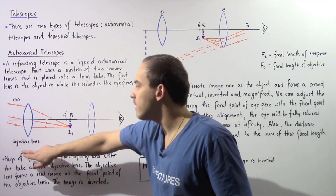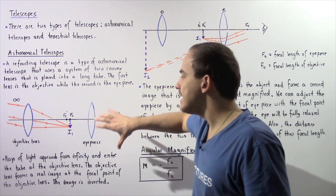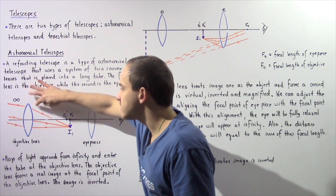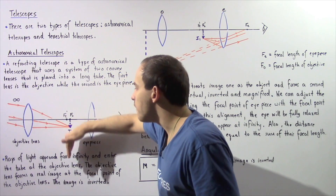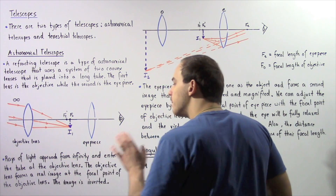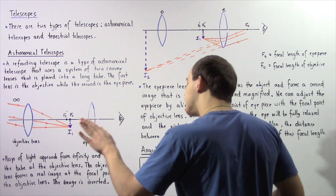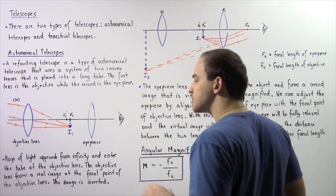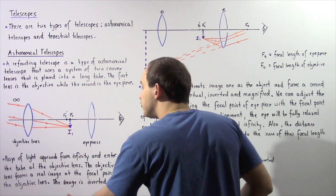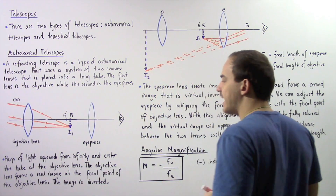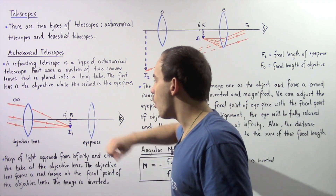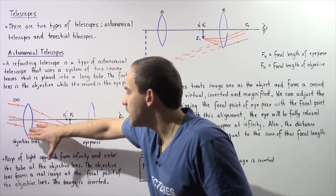FO is the focal length of the objective lens, and FE is the focal length of the eyepiece lens. The image formed by the objective lens will be located on the plane of the focal point of the objective lens. The rays of light approach from infinitely far away, enter the tube at the objective lens, and the objective lens forms a real inverted image, I1, at the plane of its focal point.